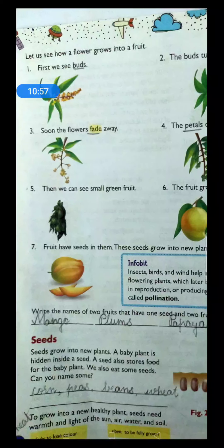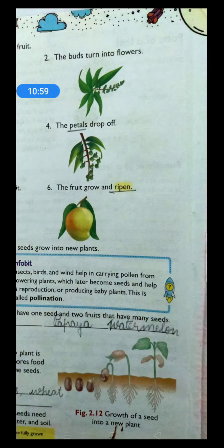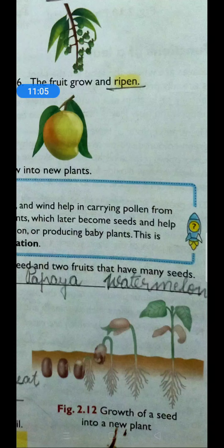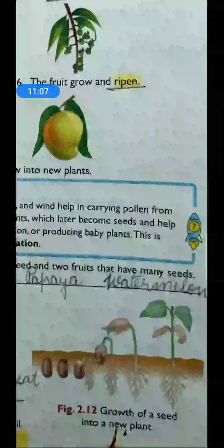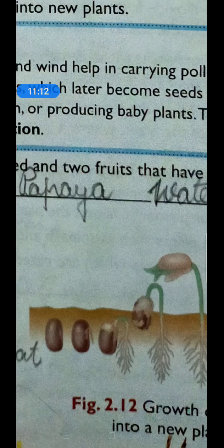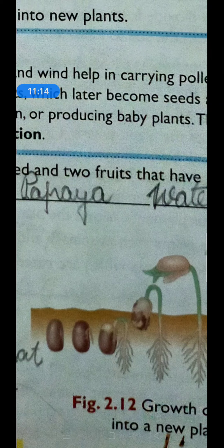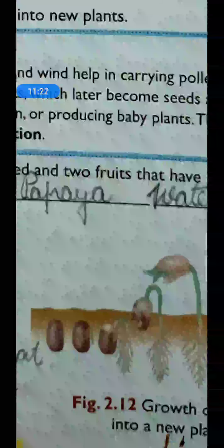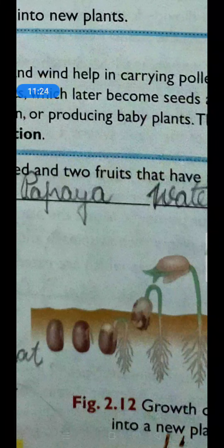Children, see here in figure 2.12 — growth of a seed into a new plant. You can see a good picture here showing how a seed grows into a new plant. First of all, we have only one seed. You can see just one seed. Then you can see a small thin hair-like root forming.